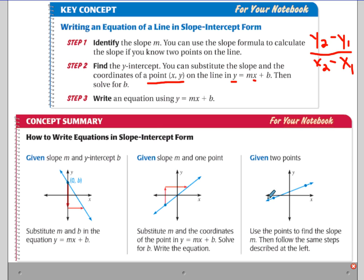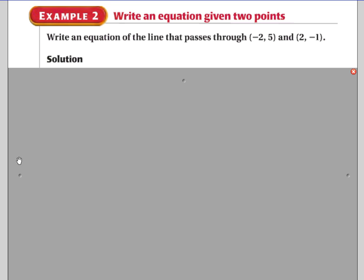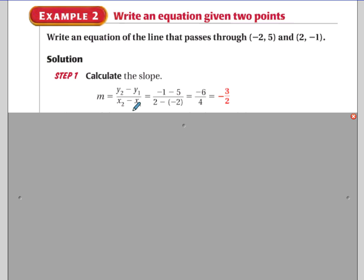Now let's look at the final method: when you are given just two points. Write an equation of a line that passes through negative two, five and two, negative one. The first step is to find the slope using the slope formula. Plugging in: negative one minus five over two minus negative two gives negative six over four, which simplifies to negative three over two.